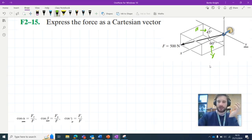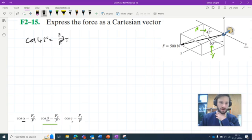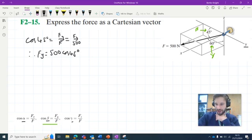Let's start with beta. We can say cos 45° equals the y component over F, which is 500. Therefore, the y component equals 500 cos 45°. But wait! As I've described in F2-13 and F2-14,